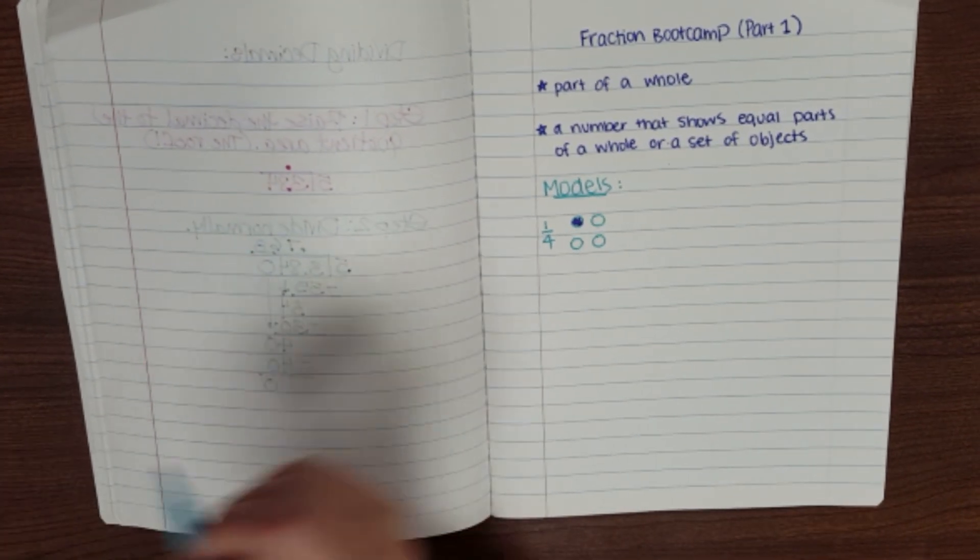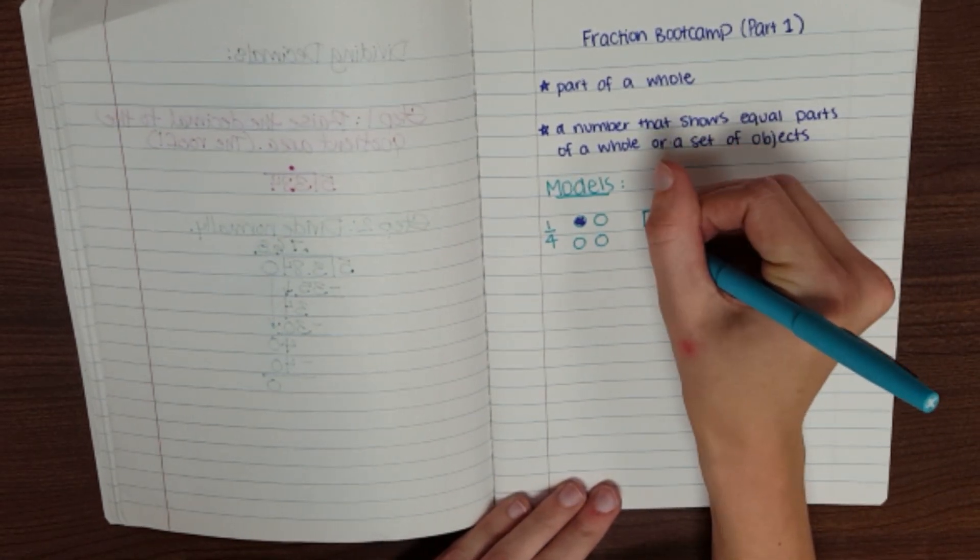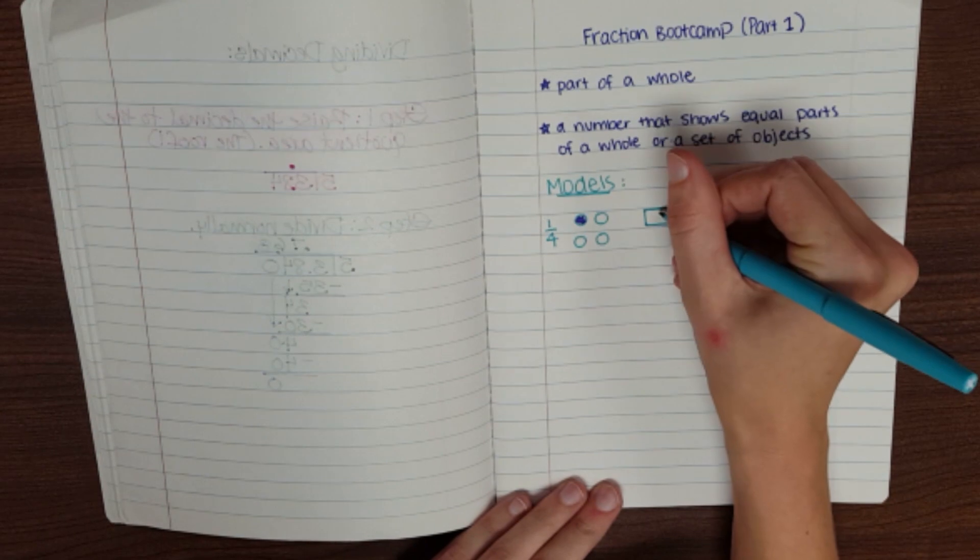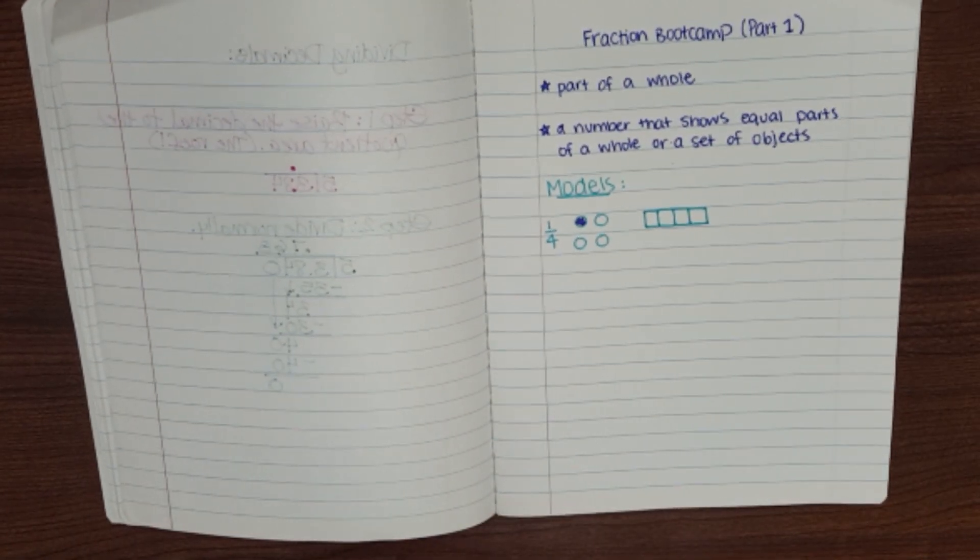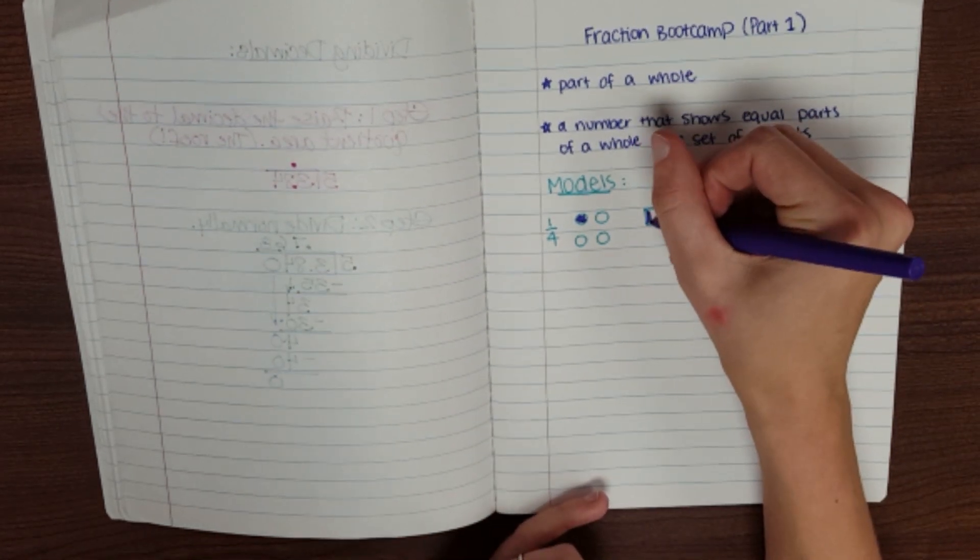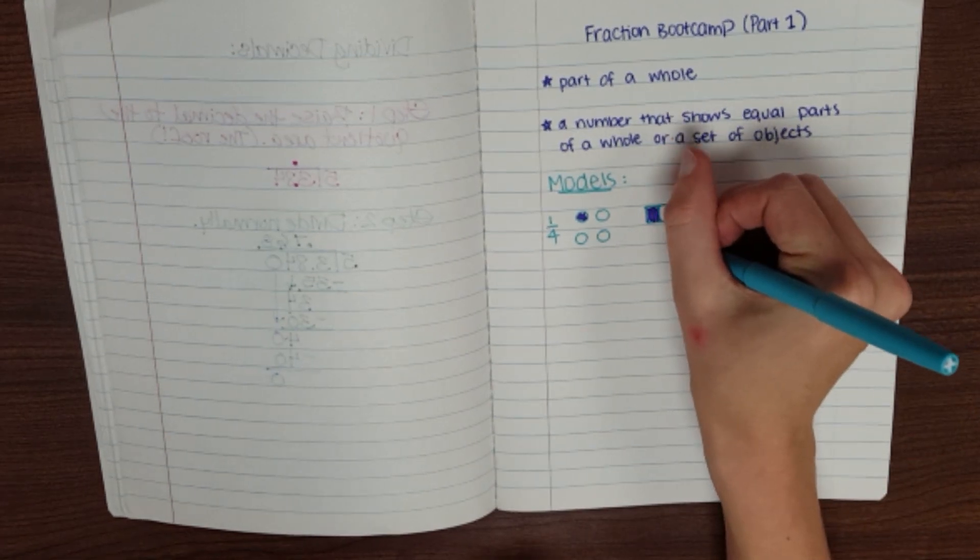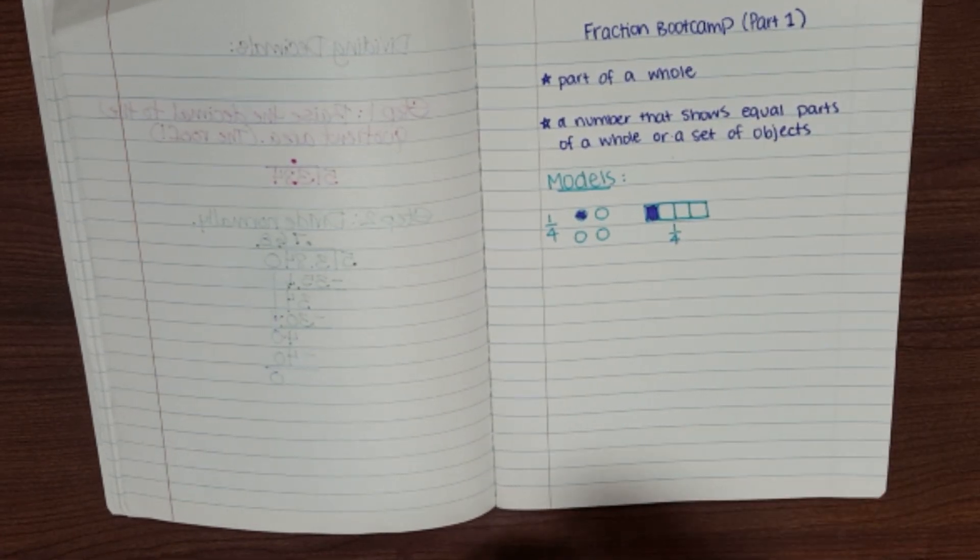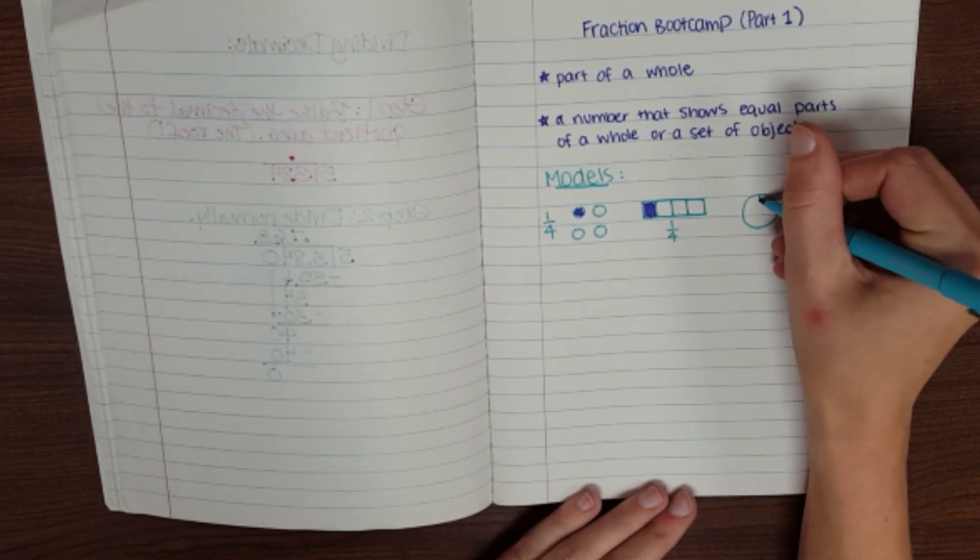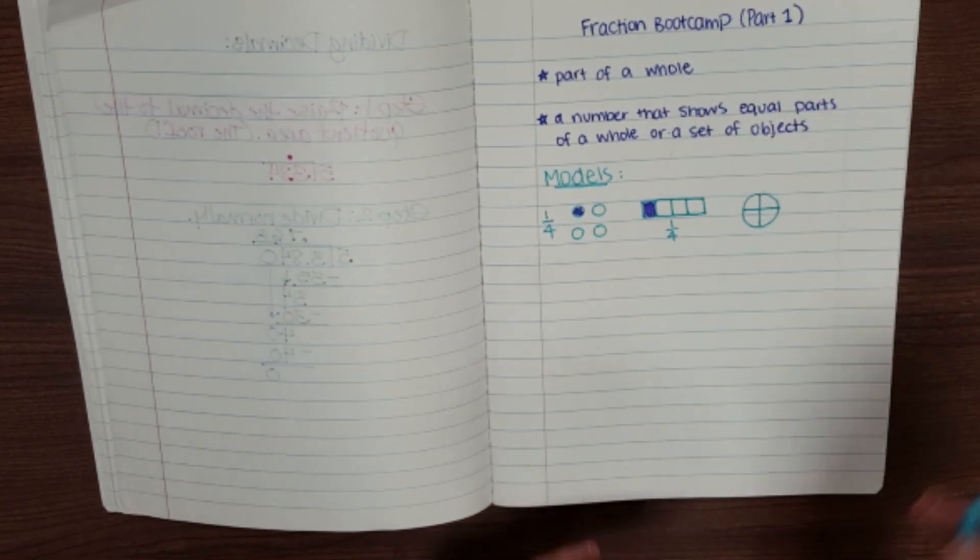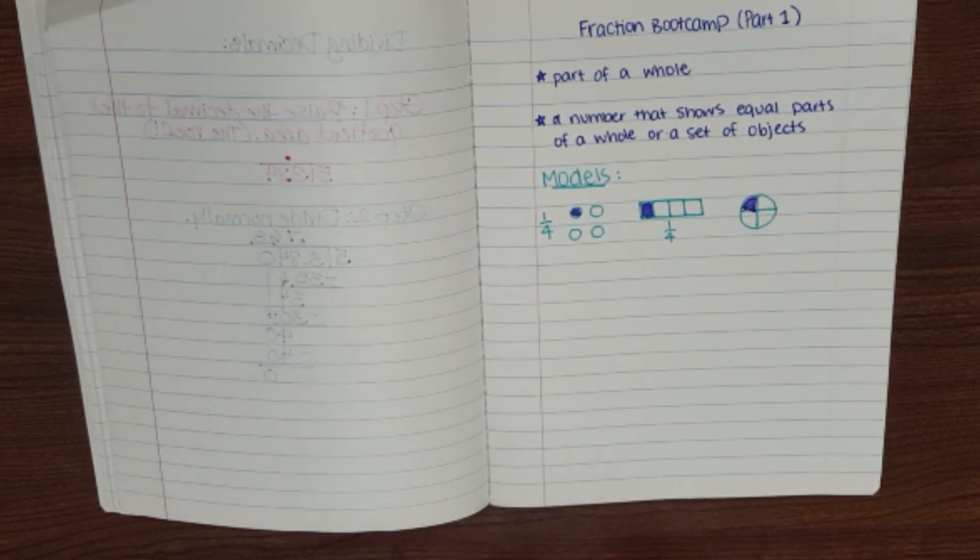Or you might see it as a fraction bar. These are very popular in fifth grade. We probably all have them hanging on our whiteboards right now. My fraction bar would have four parts. And if we're only talking about one of those parts, that would also show one-fourth. Or you might see it as a circle, split into four parts. And only one of those parts is shaded. Like whenever we talk about pizza.